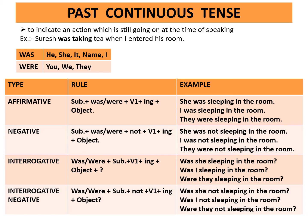Interrogative negative rule: was or were plus subject plus not plus first form of the verb plus ing plus object plus question mark. Example: Was she not sleeping in the room? Was I not sleeping in the room? Were they not sleeping in the room?